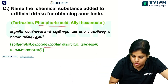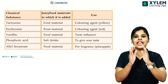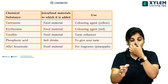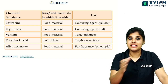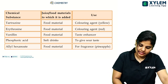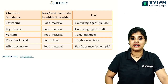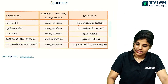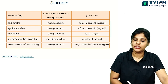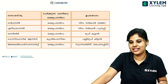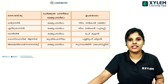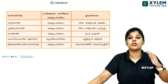Phosphoric Acid is the answer. Tartrazine is a food coloring agent — it gives yellow color. These are chemicals added to food materials in various uses.